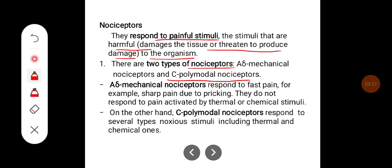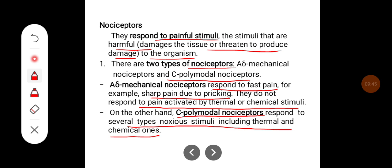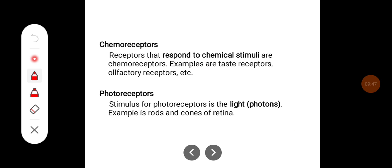A-delta mechanical nociceptors respond to fast pain — for example, sharp pain due to pricking. They do not respond to pain activated by thermal or chemical stimuli. C-polymodal nociceptors, on the other hand, respond to several types of noxious stimuli including thermal and chemical ones. Chemoreceptors respond to chemical stimuli — examples are taste receptors and olfactory receptors. Photoreceptors are the light receptors; for example, rods and cones in the retina.